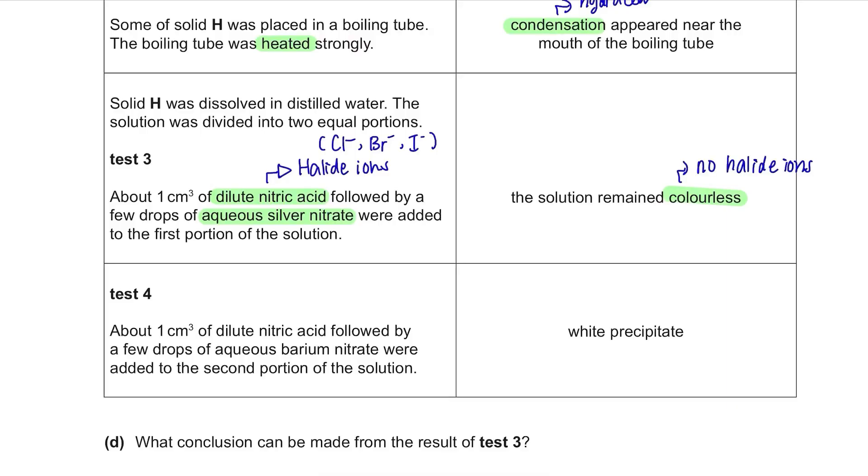Test 4. About 1 cm³ of dilute nitric acid followed by a few drops of aqueous barium nitrate were added to the second portion of the solution. Adding an acid and barium nitrate is a test for sulphate ions. If it forms a white precipitate, it means that sulphate ions are present. So test 4 shows that sulphate ions are present.